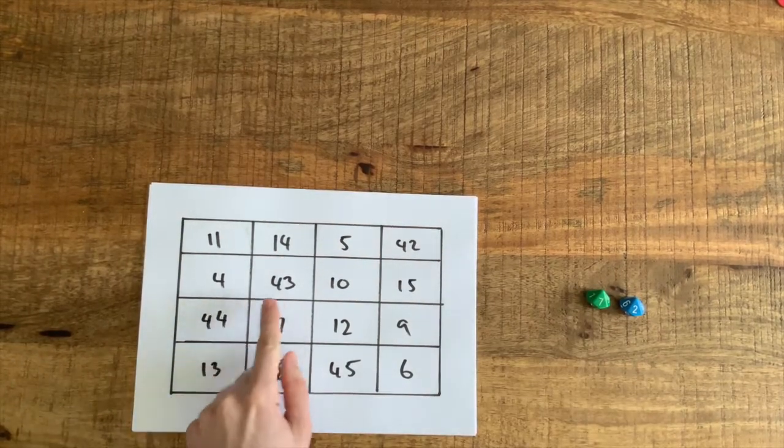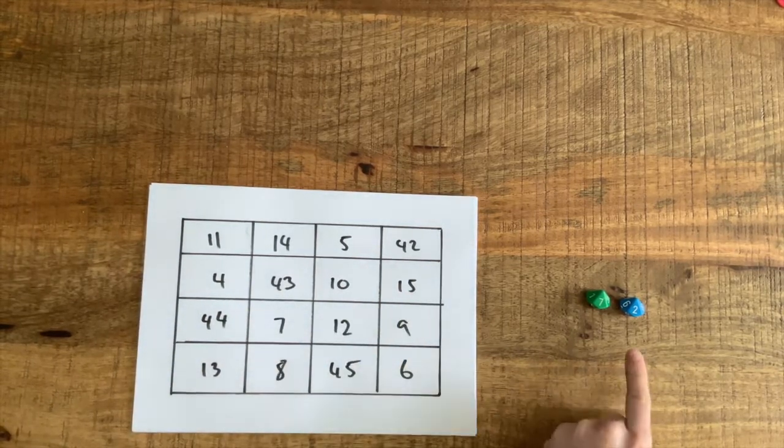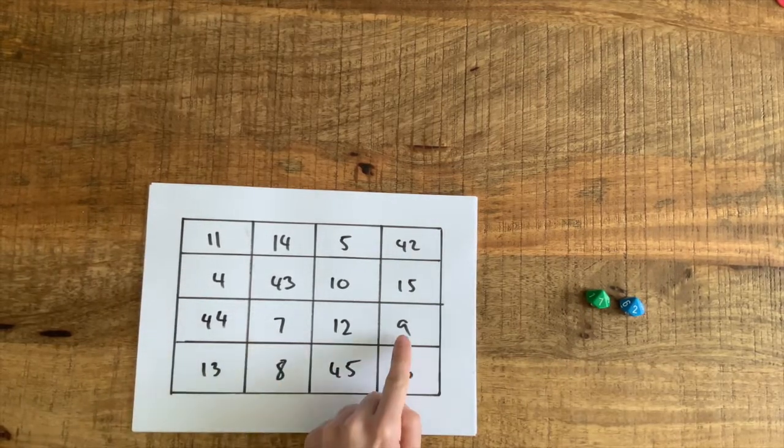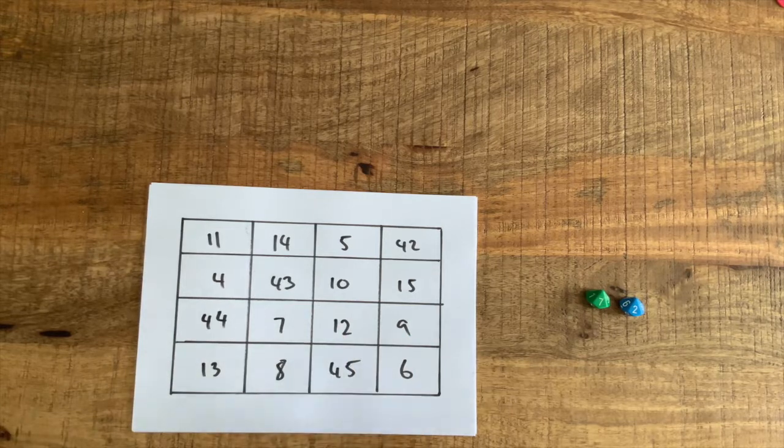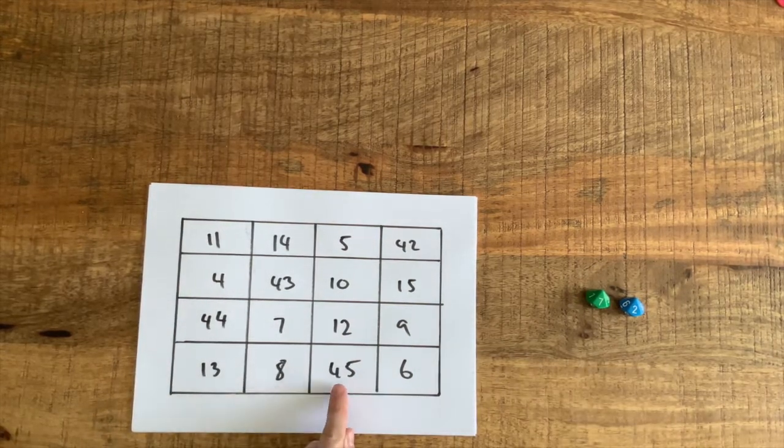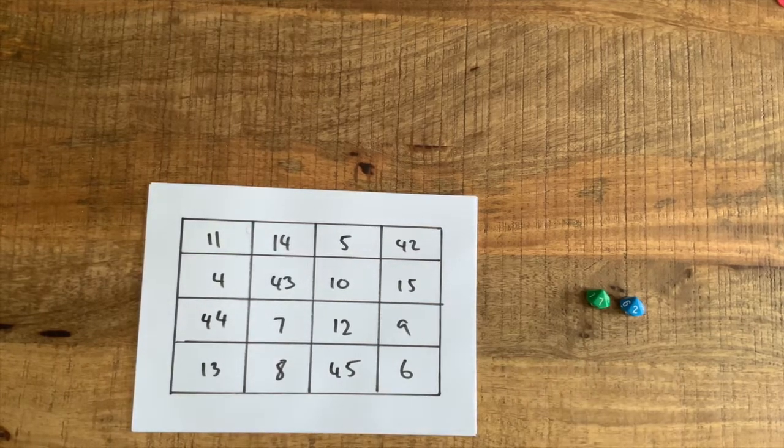If I say 4 plus 43 well that's 47 plus 10 is 57 and 15 is 72. 44 and 7 well that's 51 plus 9 is equal to 60 plus 12 is 72. And 13 and 8 is 21 plus 45 is equal to 66 and 6 is equal to 72.